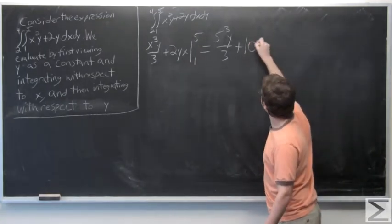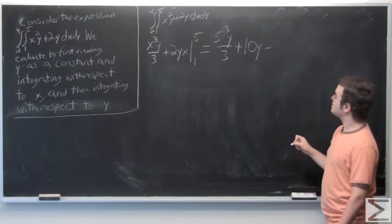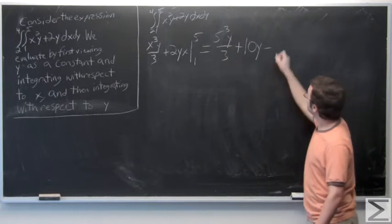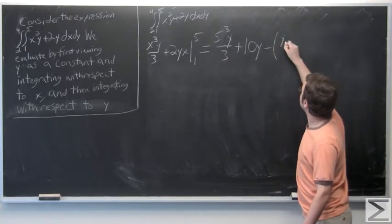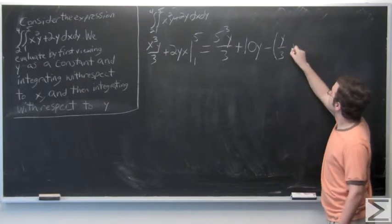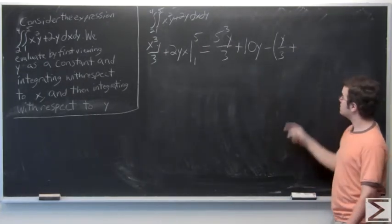minus 1 to the third y over 3, which is just y over 3 plus 1 times 2 times y, which is just 2y.